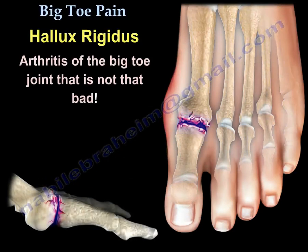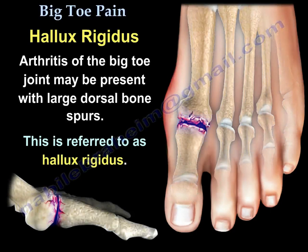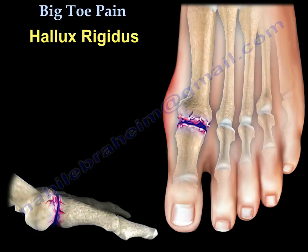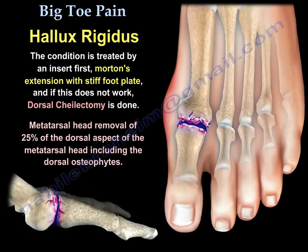Hallux rigidus is arthritis of the big toe joint. It may be present with large dorsal bone spurs. This condition is associated with swelling and restriction of dorsal flexion of the big toe. There will be some cartilage remaining within the joint space and bone spurring around the joint dorsally. It is treated first with an insert, and if that doesn't work, surgery called dorsal cheilectomy is performed, removing 25% of the dorsal aspect of the metatarsal head including the dorsal osteophytes.